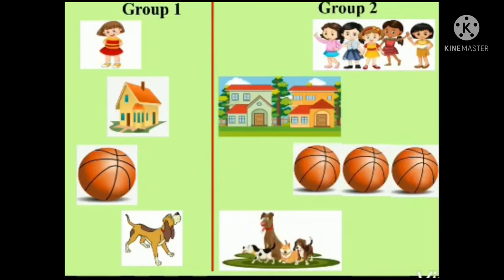So, tell me, children, what did you observe in these pictures? In the first group, you can see one girl, one house, one ball, and one dog — they are all one in number. And in the second group, there are five girls, two houses, three balls, and four dogs. It means they are more than one in number, so we call them many, or plural.